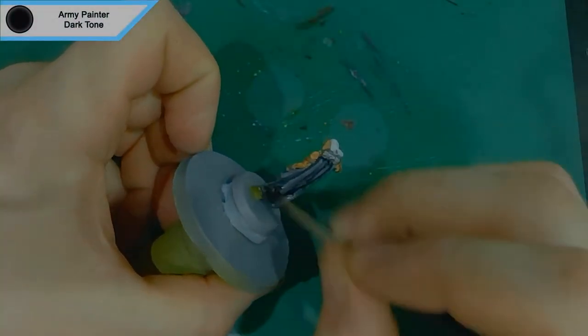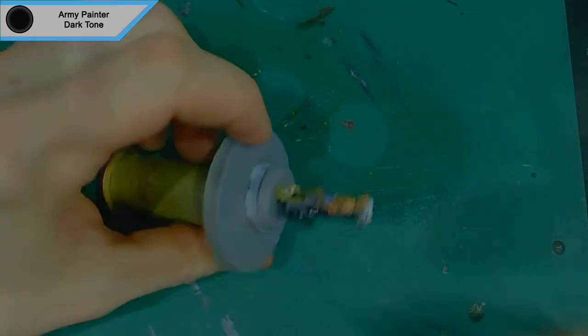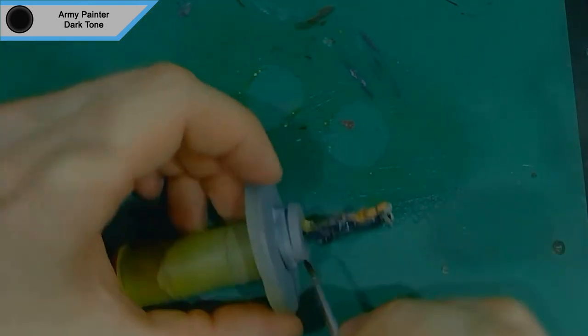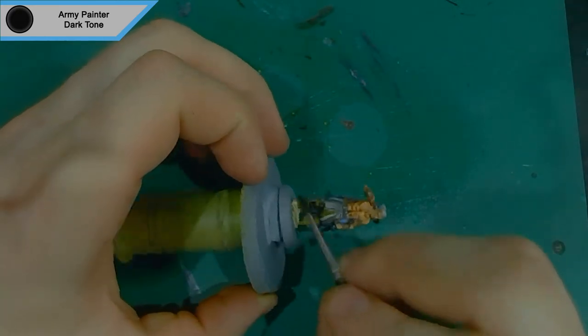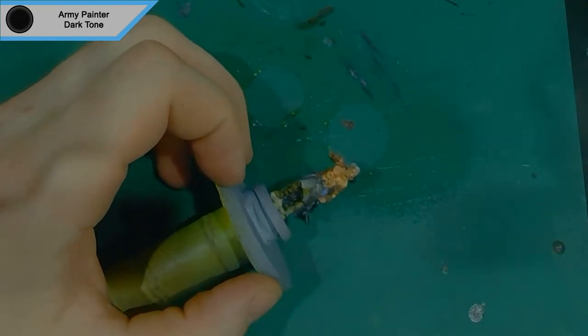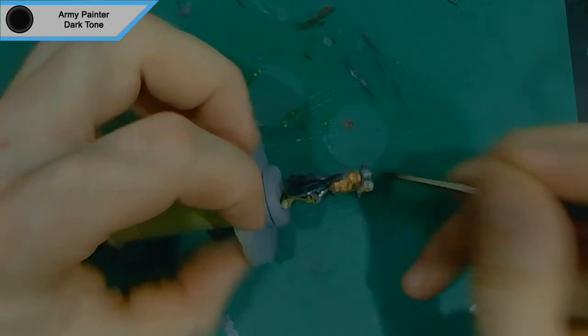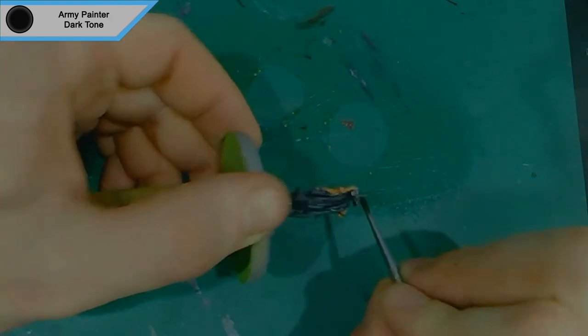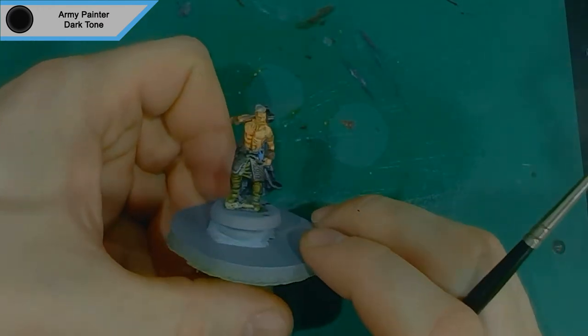That's it for that. Then we move on to dark tone, which is the rest of the model. Everything you've got left, cover it in dark tone, even the hair. The hair is exactly what you wanted it to be when it's covered in dark tone. I find the hemp rope actually works really well covered in dark tone. I would have thought maybe a green wash on that, but then it would have made it green. Dark tone just adds shadow.